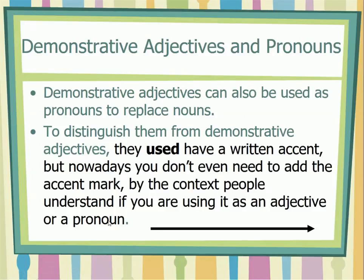Demonstrative adjectives can also be used as pronouns to replace nouns. To distinguish them from demonstrative adjectives, they used to have a written accent mark. Our book still includes that old rule, but nowadays you don't have to add the accent mark. By context, since there's no noun present, people understand you're using a pronoun — and you write and pronounce it the very same way.